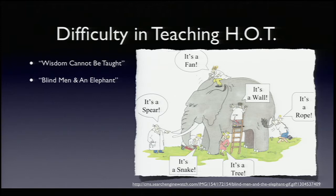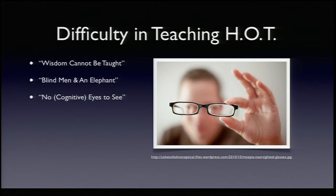Different blind men touching the elephant, touching the different parts, describe it differently. Some say it is like a fan, some say it is like a wall, some say it is like a rope. But to understand what the elephant is really like, we need to open our eyes so that we can see — and sometimes it is not that we don't want to see, but maybe we do not have the eyes to see.